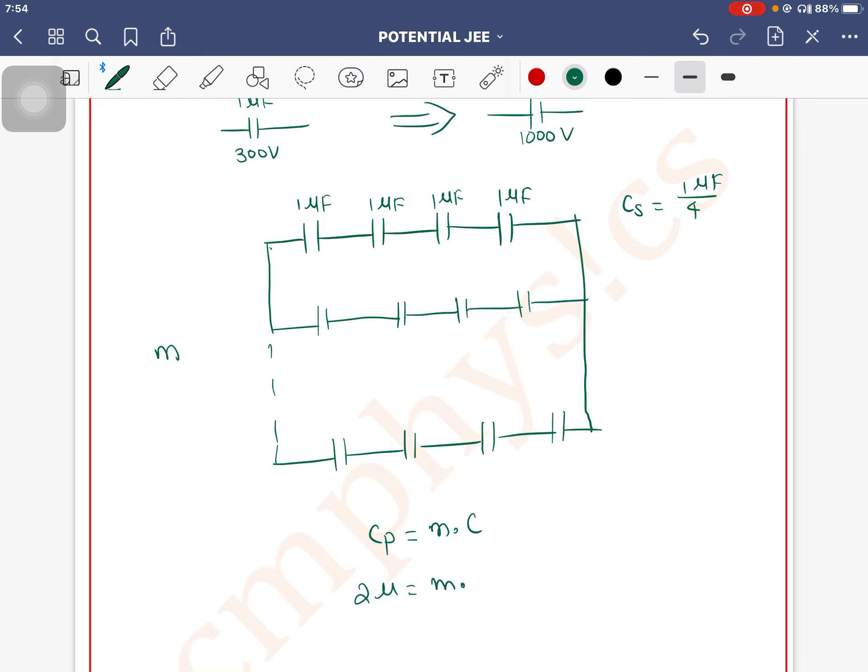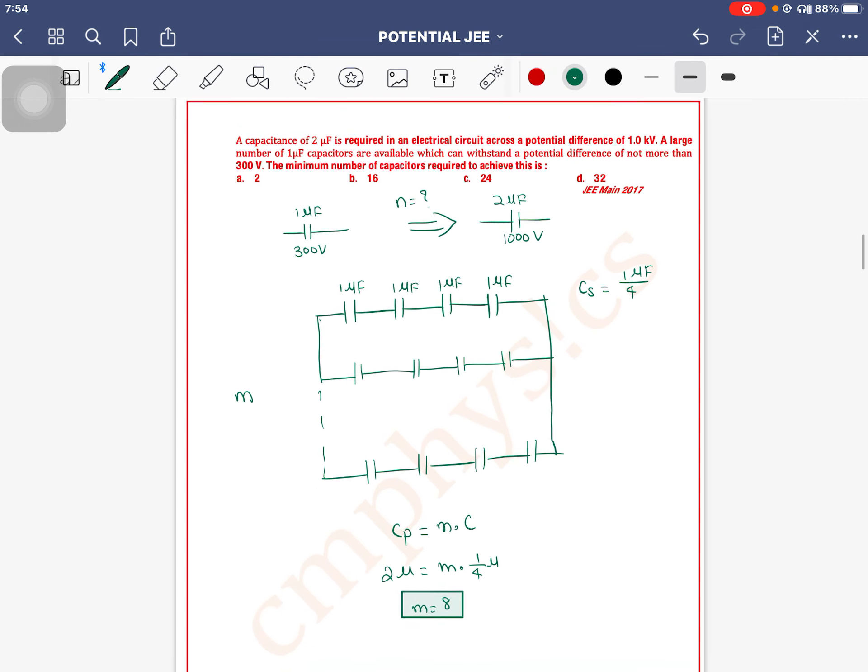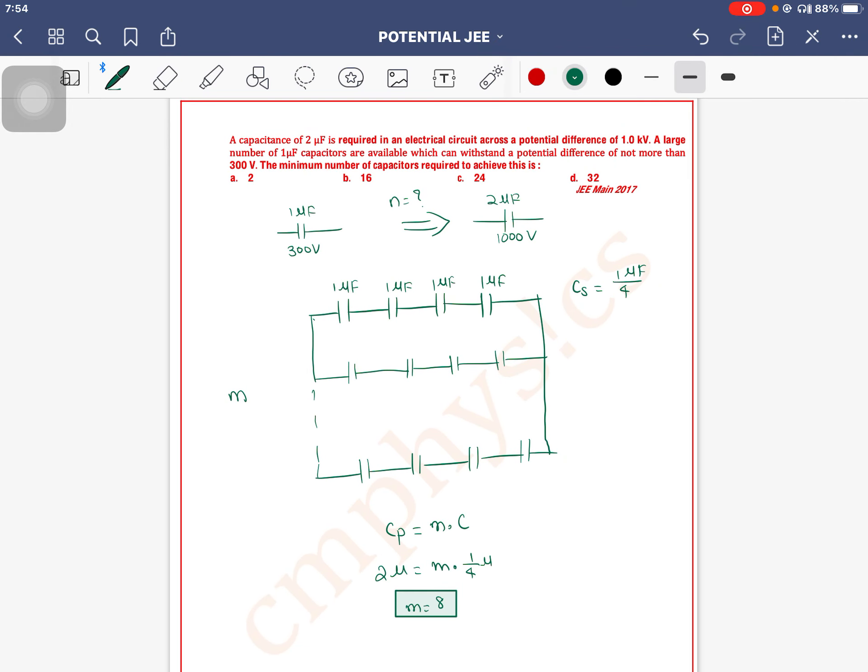Each branch has capacitance 1/4 microfarad, so m equals 8. We need 8 branches total, and each branch has 4 capacitors. So 8 times 4 equals 32 capacitors. Option D is correct.